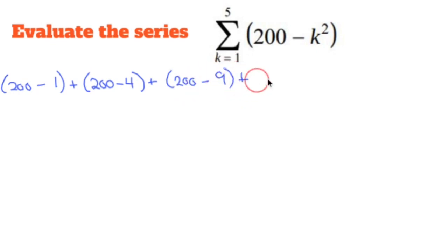plus 200 minus 4 squared, which is 16, plus last but not least 200 minus 5 squared, which is 25.